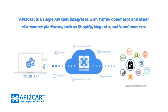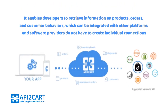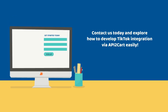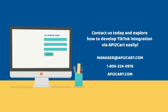API2Cart is a single API that integrates with TikTok Commerce and other e-commerce platforms, such as Shopify, Magento, and WooCommerce. It enables developers to retrieve information on products, orders, and customer behaviors, which can be integrated with other platforms so software providers do not have to create individual connections. Contact us today and explore how to develop TikTok integration via API2Cart easily.